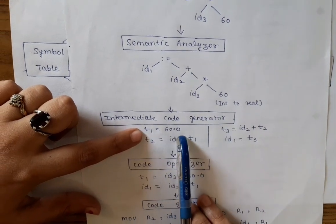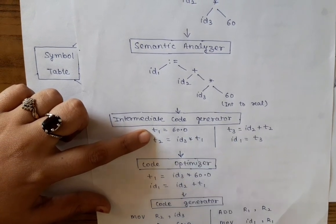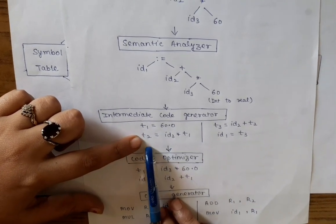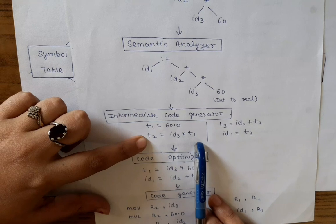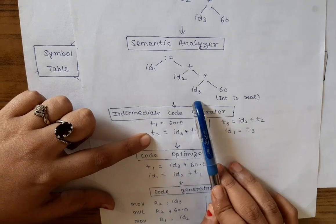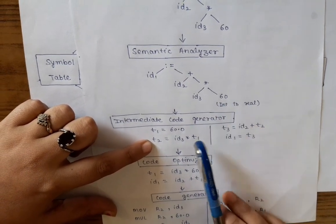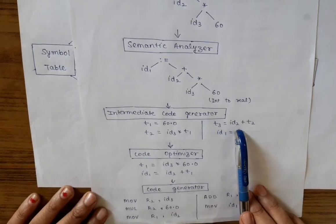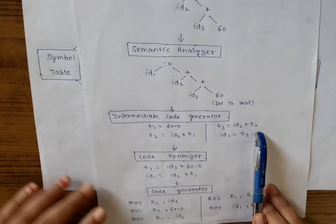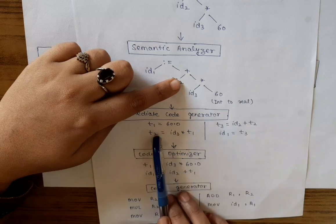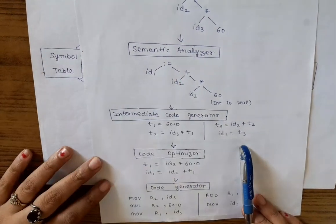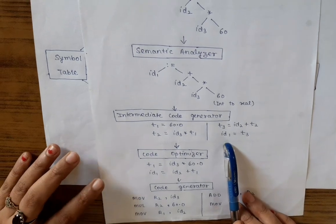Now we store 60.0 because it converts into real. Here T1 equals 60.0. T2 equals identifier 3 multiplied by identifier 1, means identifier 3 multiplied by T1 that is 60. Next, T3 equals identifier 2 plus T2. Identifier 2 plus T2 means identifier 3 multiplied by 60. And at the last, T3 stores in identifier 1.